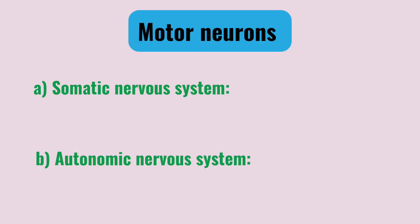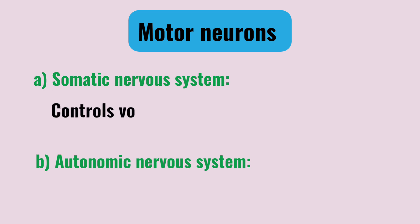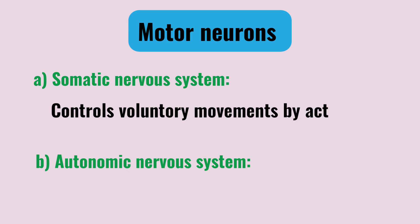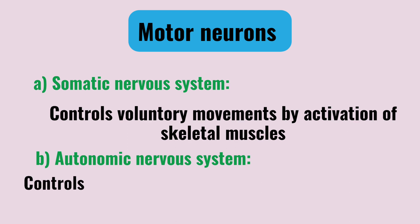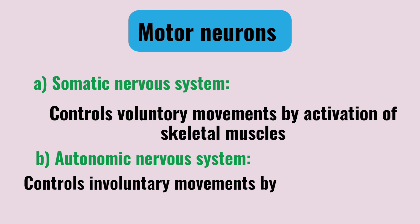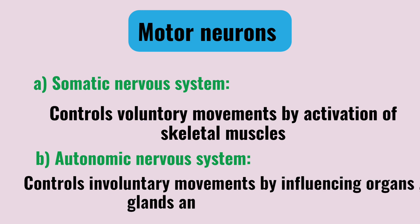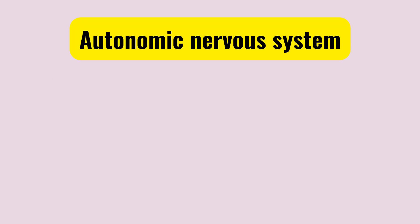The motor neurons are further divided into two types: first, the somatic nervous system; and second, the autonomic nervous system. The somatic nervous system controls voluntary movements — that means muscles you consciously control in your body. The autonomic nervous system controls involuntary responses, such as heartbeat, breathing, and many other involuntary functions in our body.